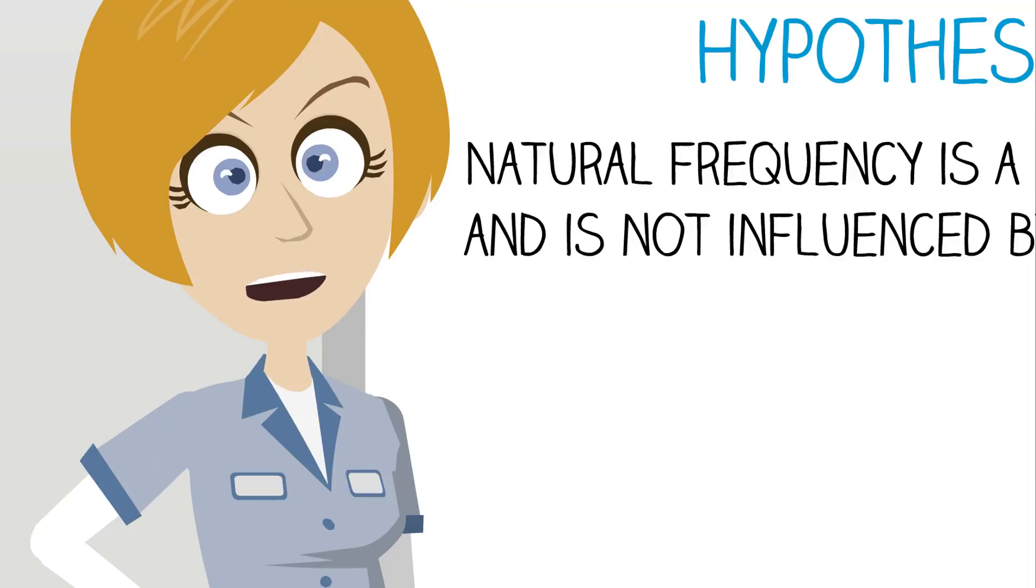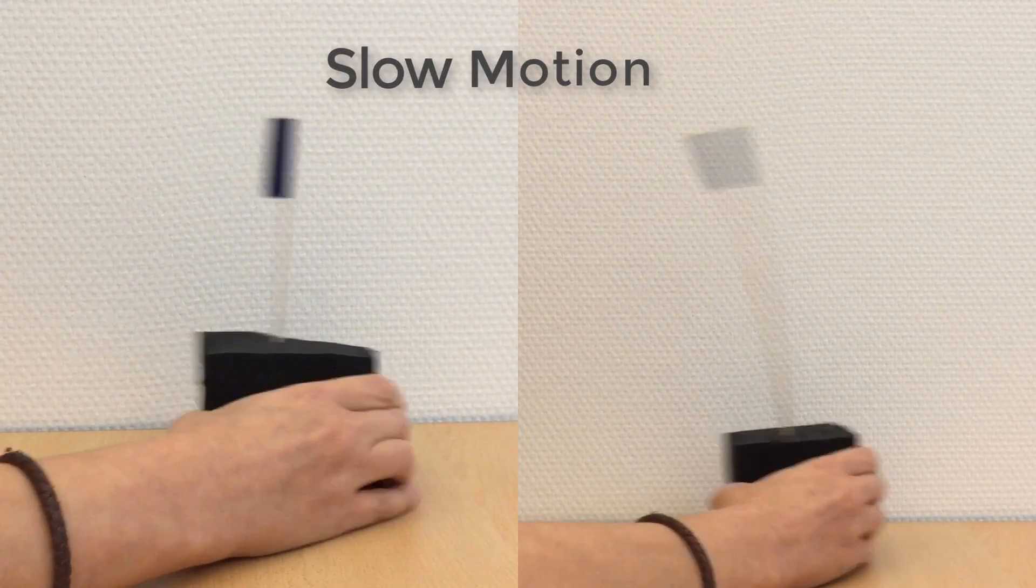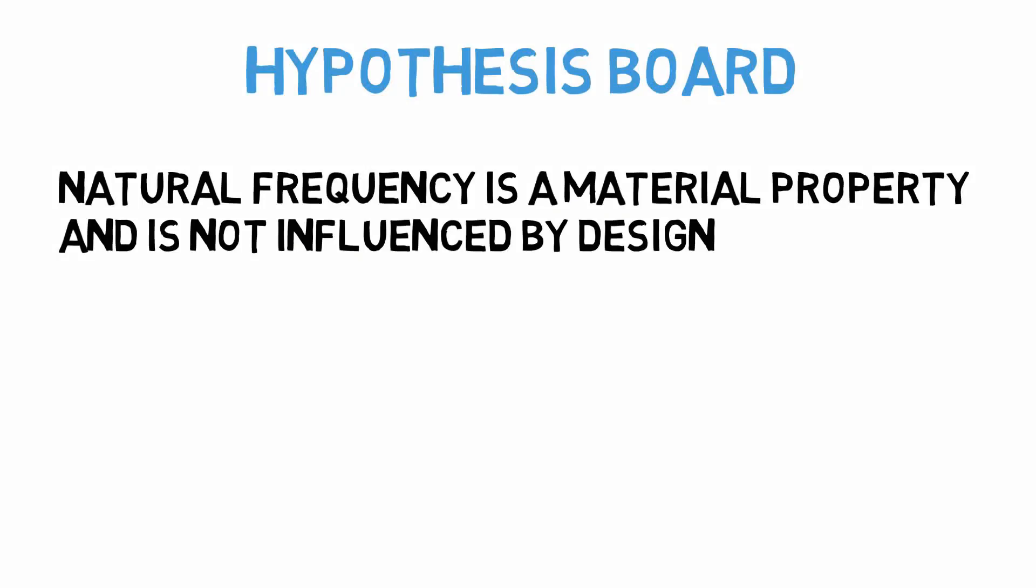So now, what can we learn from our experiment? Based on our hypothesis, our oscillating structures should have behaved in the same way, but they didn't. What we saw was that there was a clear difference between the short skewer setup and the long skewer setup. Therefore, we can say that our hypothesis has been disproved, and that the resonance is indeed influenced by structural design.